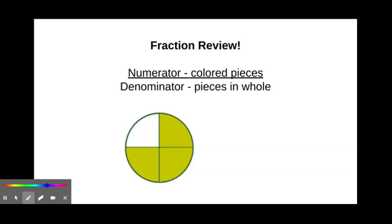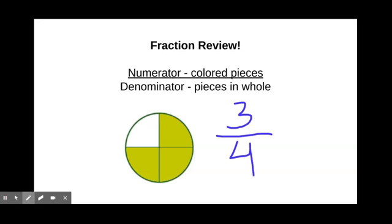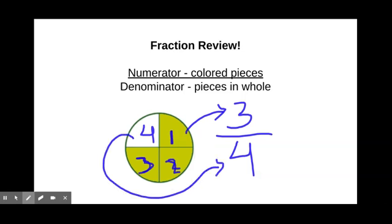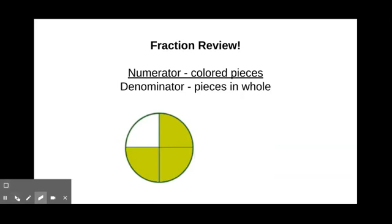What fraction of this shape is colored in? What would you say? If you said that three-fourths of the shape is colored in, you're correct. There are one, two, three pieces colored, so that's where our three comes from, and there are one, two, three, four pieces in the whole thing, which is where our denominator of four comes in. So now that we've reviewed the parts of a fraction, let's go a little bit farther.